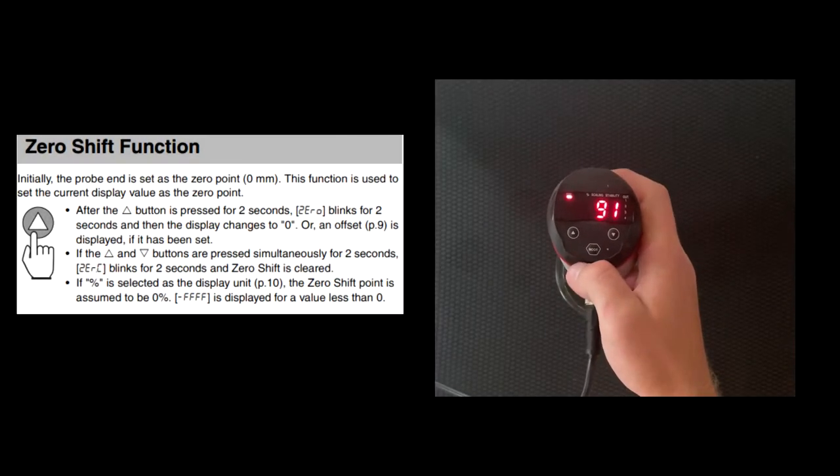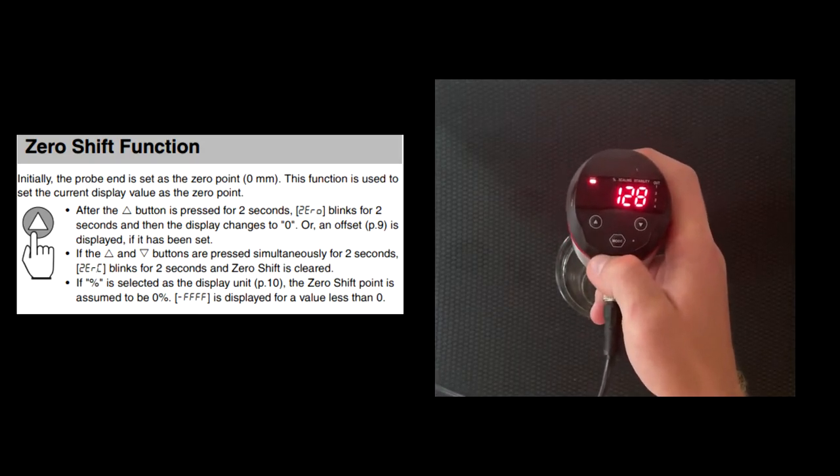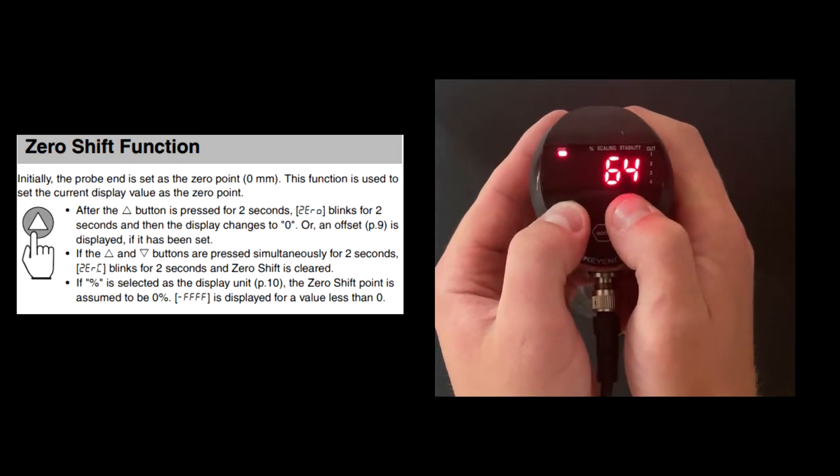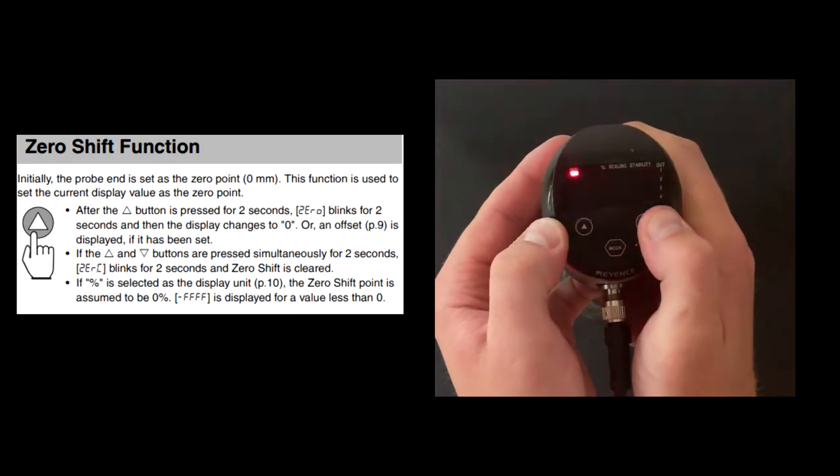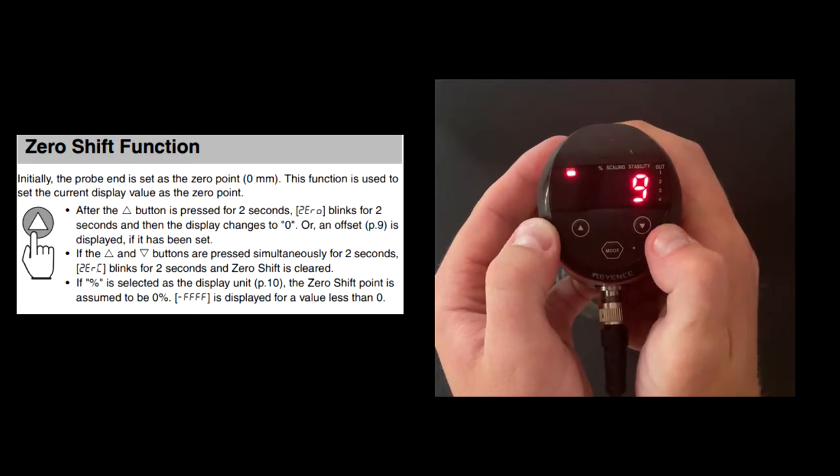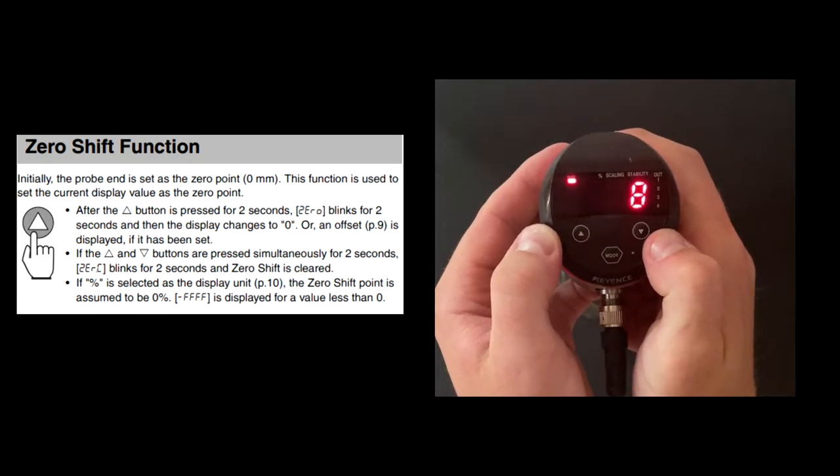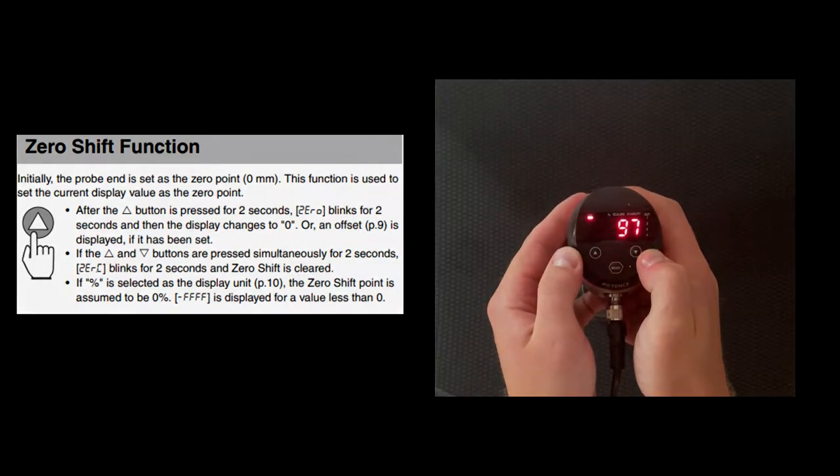Our next recommendation is to perform a zero shift. To do this, you want to maintain stability on the main display screen. Place just the tip of the probe into the liquid and hold the Up button until ZERO flashes on the screen. This will be a successful zero shift, and now the tip of the probe will be calibrated for zero millimeters.